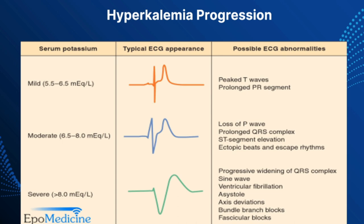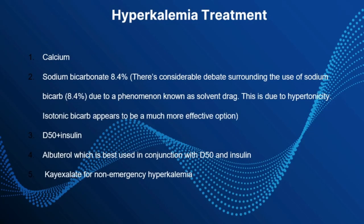How would you actually treat these patients? Calcium, calcium, calcium. Calcium is our best friend in treating any hyperkalemic patient — whether chloride or gluconate. Calcium stabilizes the myocardium and prevents the patient's rhythm from degenerating into V-fib.